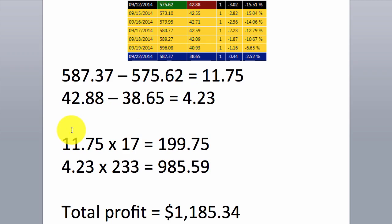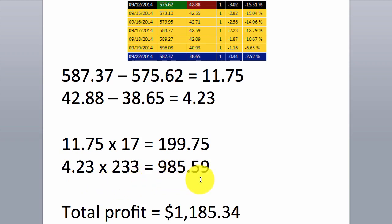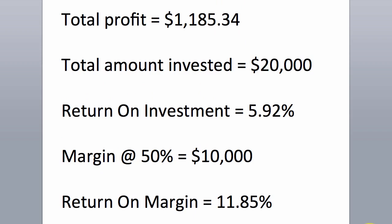In dollar terms, on our long side we made 11.75 points multiplied by the 17 shares we purchased, equals $199.75. Likewise on the short, we made 4.23 points on the trade multiplied by our position size of 233 shares, equals $985.59. When we add those two numbers together, we get a total profit on the pair trade of $1,185.34. So if we invested a total of $20,000 — $10,000 on each leg — the return on investment would be 5.92%. Or if we were trading on margin and had to put up 50% of the total position size, meaning $10,000, our return on margin would have been 11.85%.